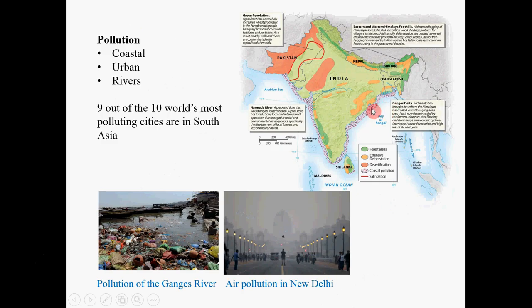A lot of pollutants are organic material, and they consume a lot of oxygen, which takes oxygen away from sea creatures. This area has gone through the green revolution and uses a lot of chemicals and fertilizers in agriculture to increase land productivity. The result is that those chemicals are released into water bodies and pollute them. The Narmada River is a medium-sized river in India where the government wants to build large dams that would force people to relocate and may cause ecological problems in the river basin.